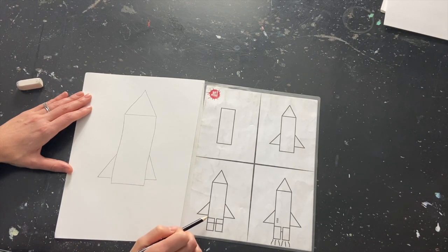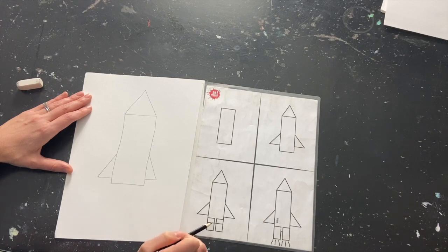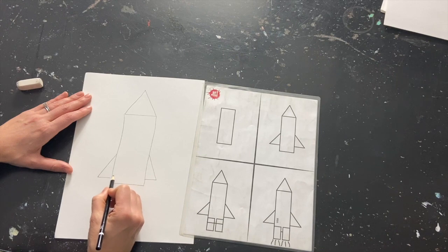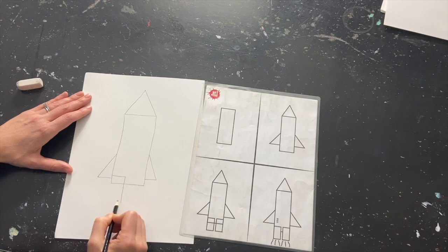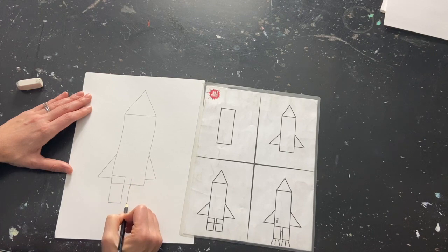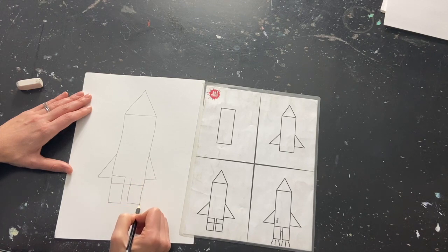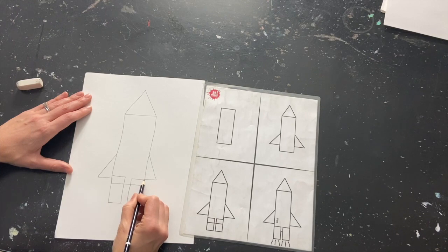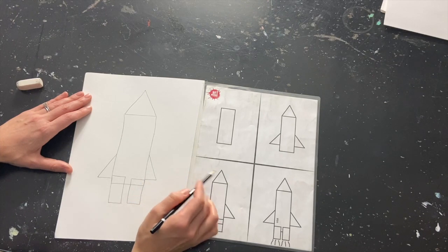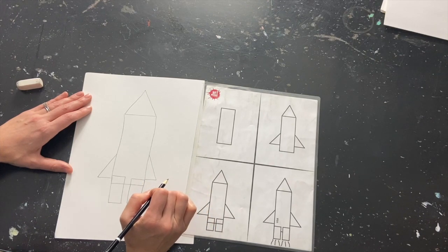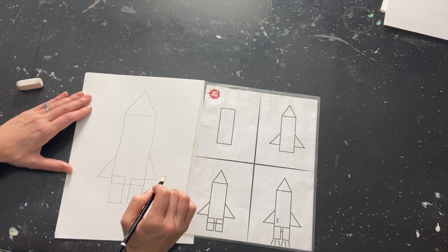Next we're going to move on to the bottom of this and I see two kind of longer rectangles. I'm going to add them in here and here. Now notice sometimes I make things a little differently than from the image and that is completely okay. These are just guides and you're welcome to change or add anything that you would like.